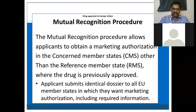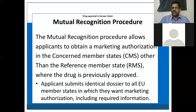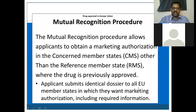This is the advantage of filing under the mutual recognition procedure: if you don't want to market in all countries from the beginning, you can limit your area and market only in a concerned member state. Under this procedure, the drug is previously approved under the RMS, and the applicant submits an identical dossier to all European Union member states in which they want marketing authorization.